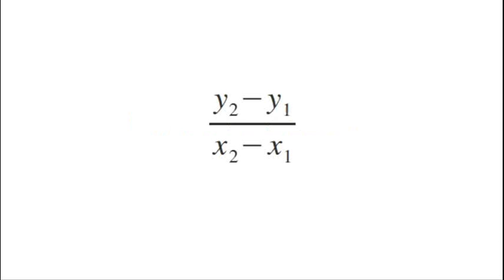This is shown by y2 minus y1 over x2 minus x1. This right here is the equation of the slope of the line passing through the two points given.